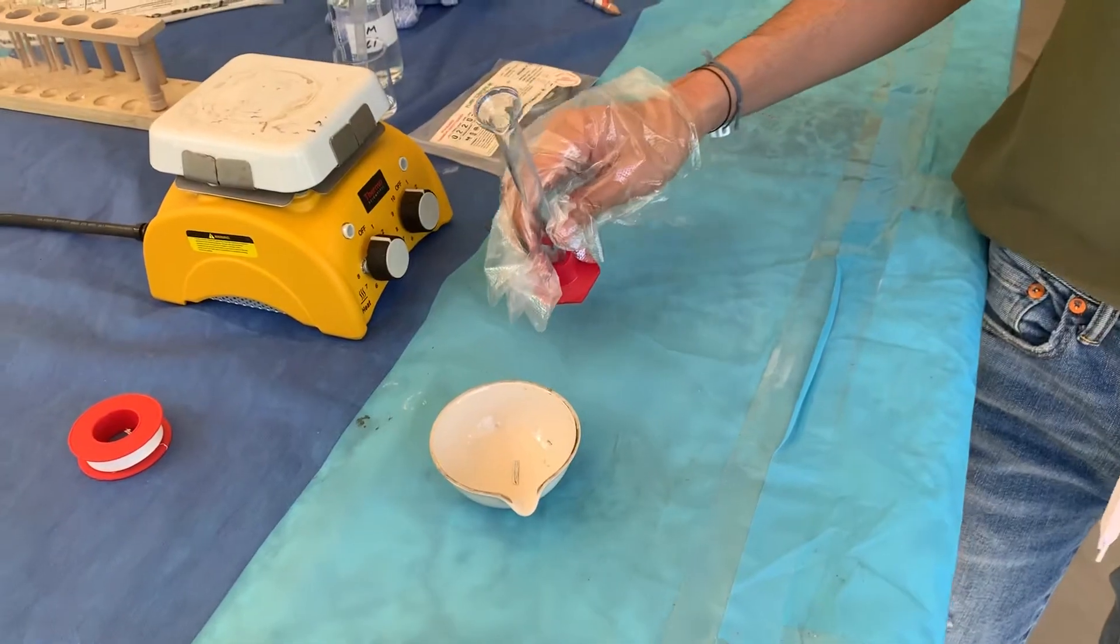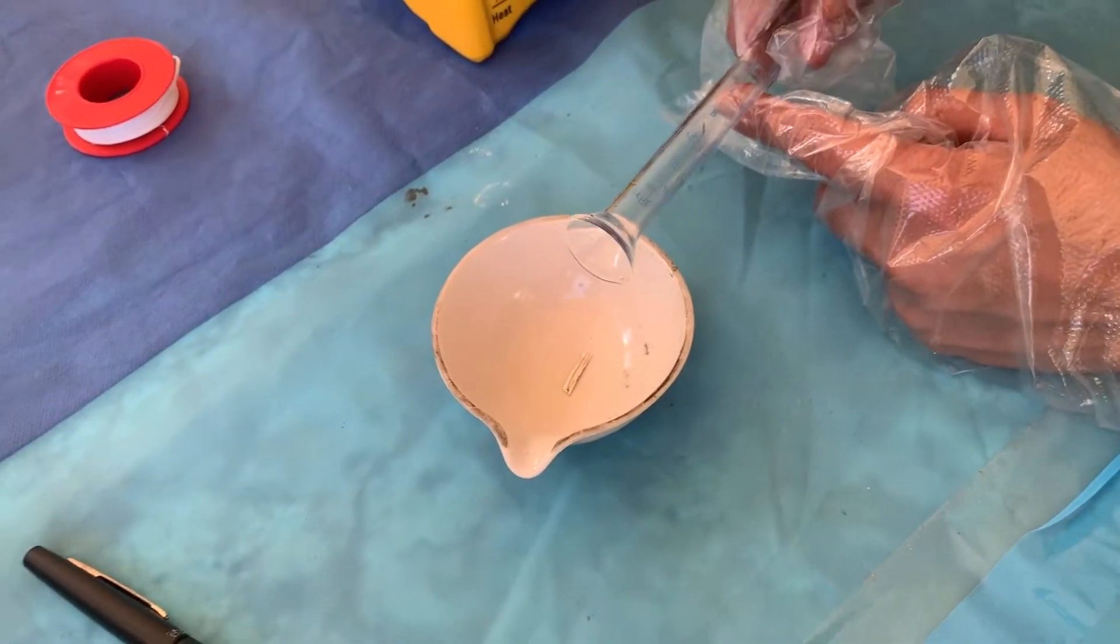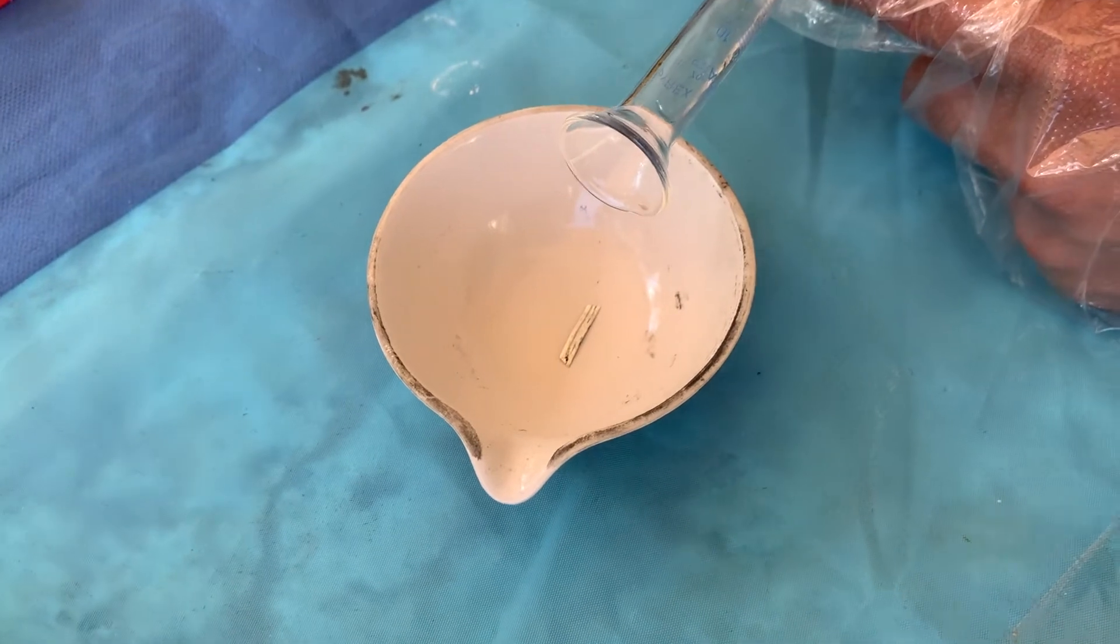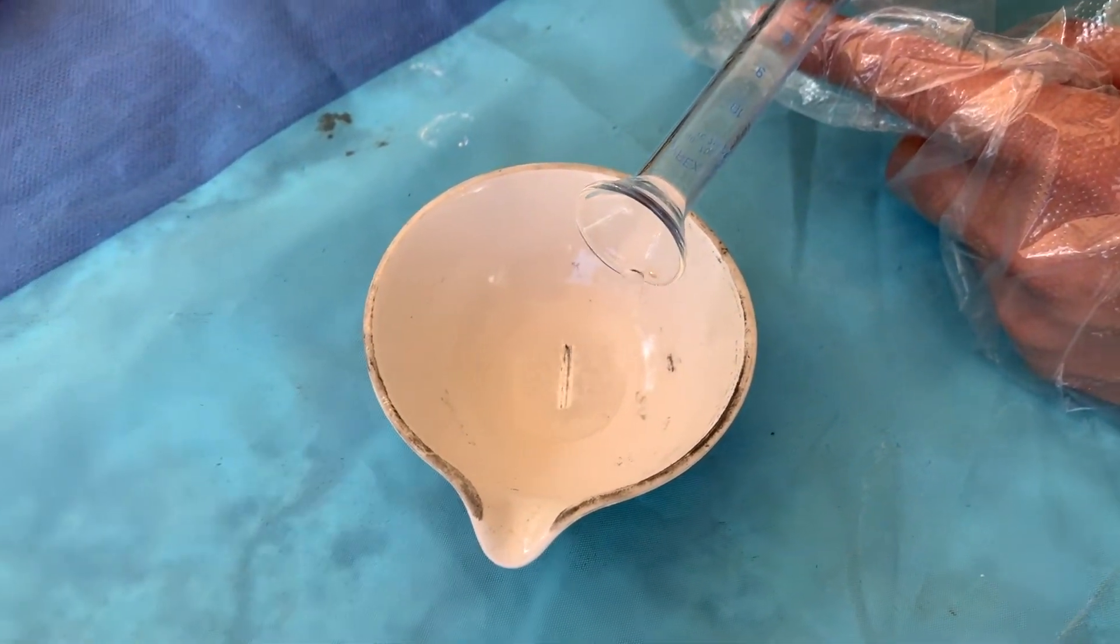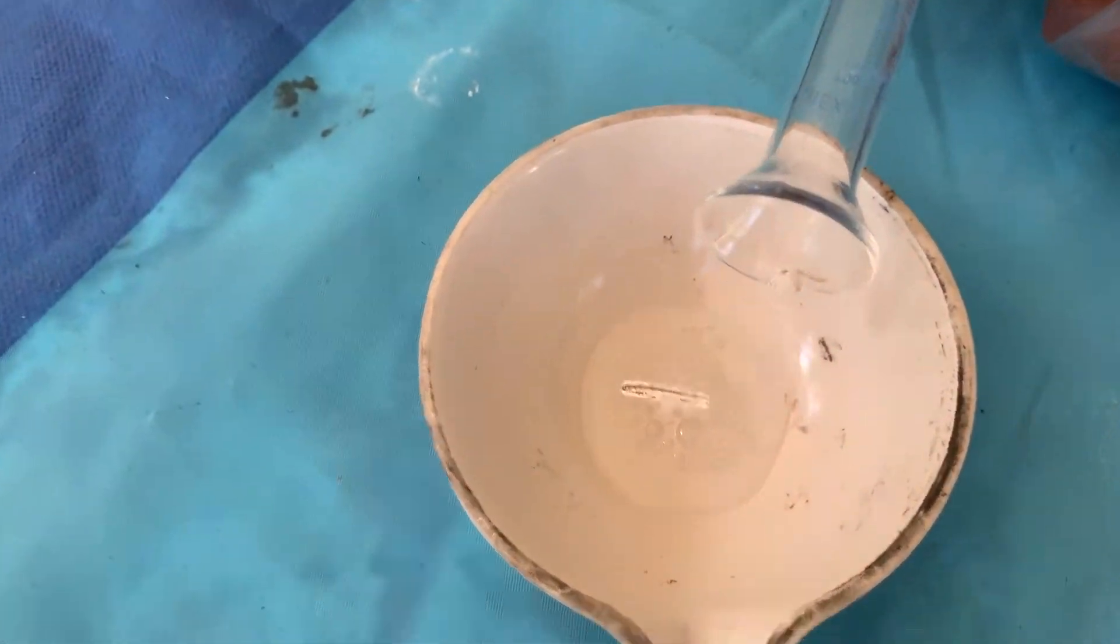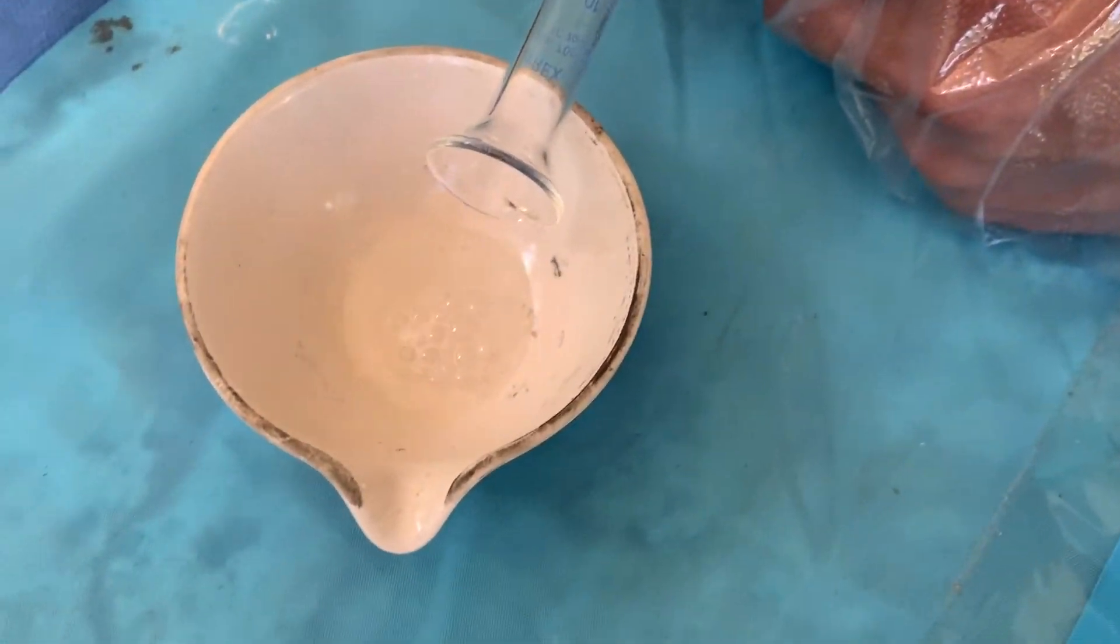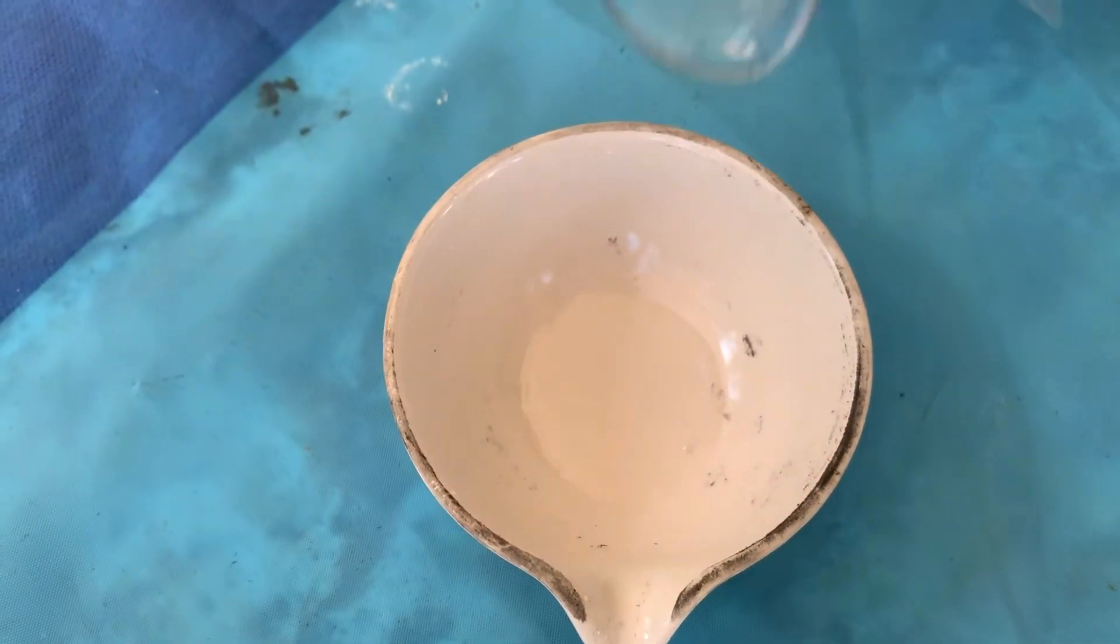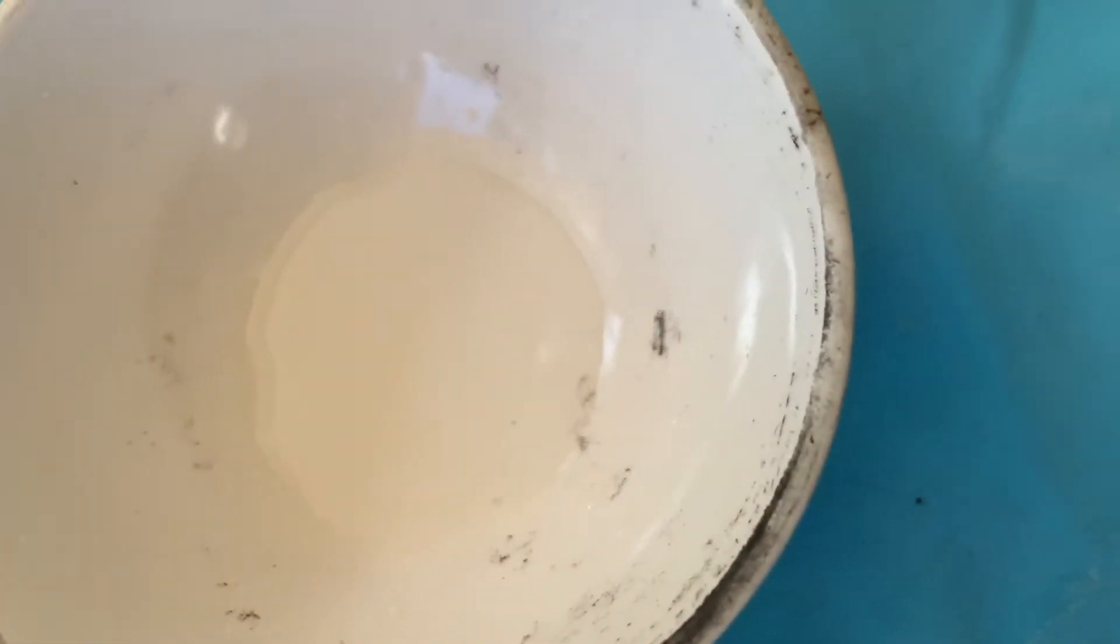So now we're going to slowly transfer the HCl into the evaporating dish with the magnesium ribbon. Yeah, keep going. And we have to wait for it to fully react. And that is what we get.